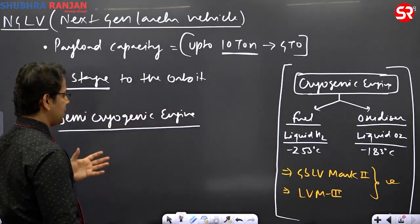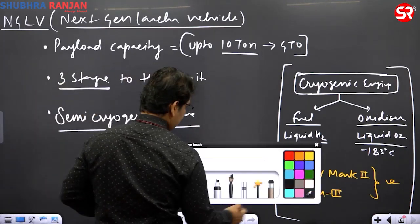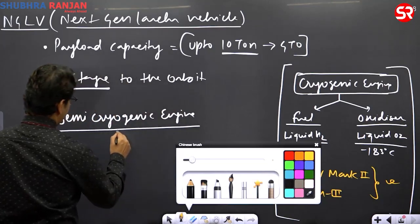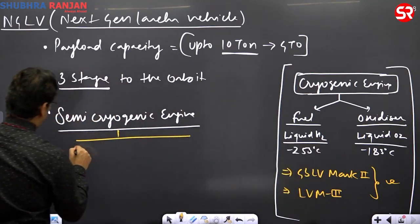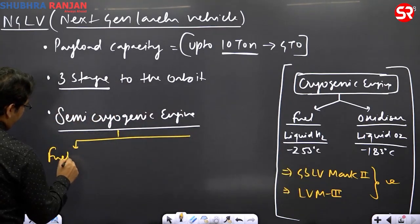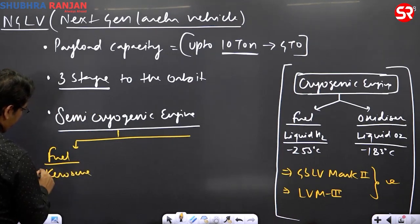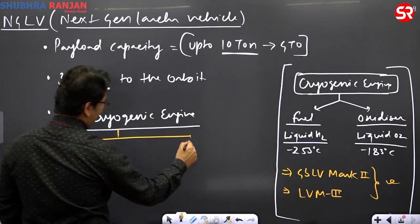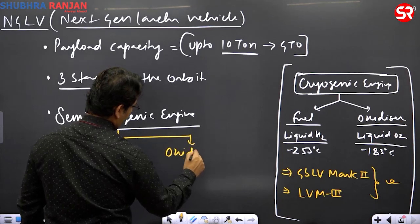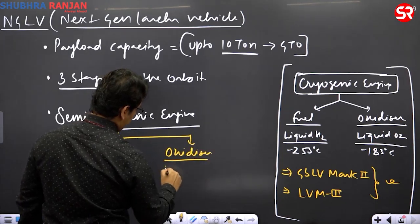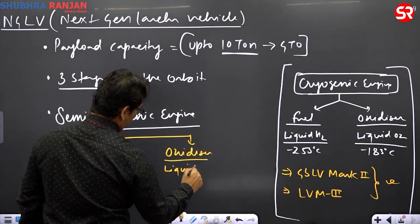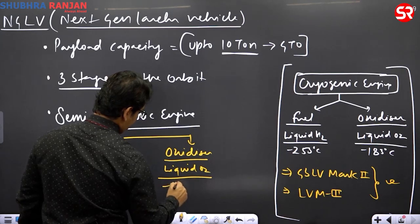What is the difference between cryogenic and semi-cryogenic? That we are going to discuss. In semi-cryogenic engine, the fuel is kerosene, and oxidizer is liquid oxygen at minus 183 degree.